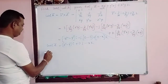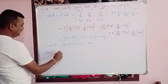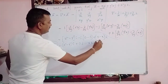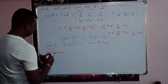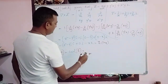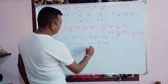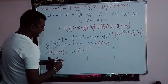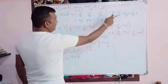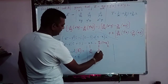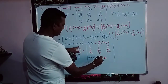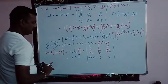Next, I want to find curl of curl vector A. Denote curl A as vector B, so we need curl of vector B. Using the same definition, it is a third-order determinant with first row i, j, k; second row dou/dx, dou/dy, dou/dz; and third row containing the components of vector B: z square minus y square, 0, and minus x.